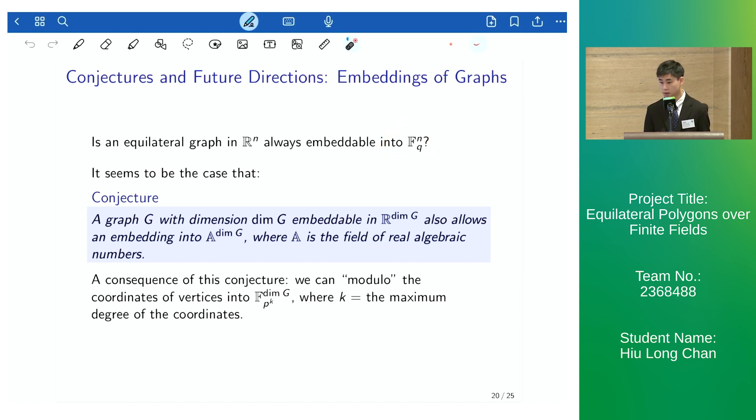If the conjecture that a graph with dimension G can be also embedded into algebraic numbers, then we can modulo them into finite fields, and we can thus embed it into a finite vector space.